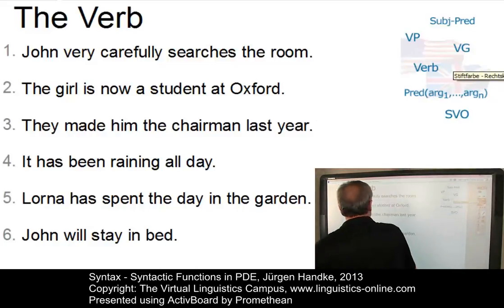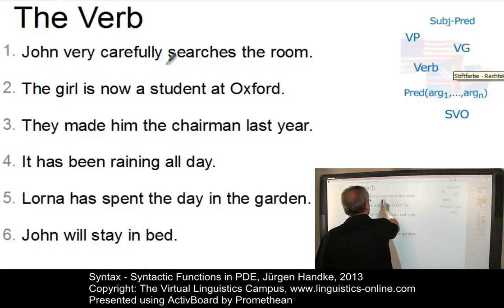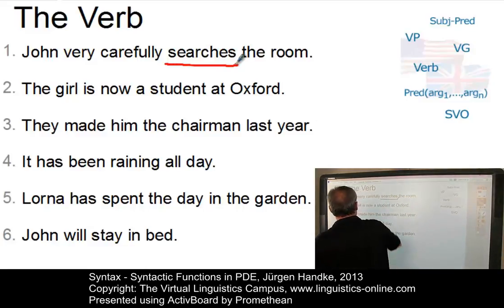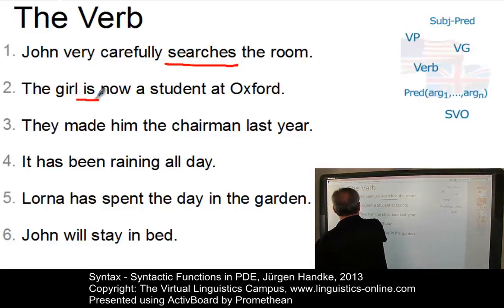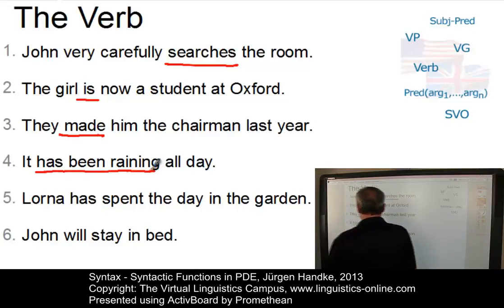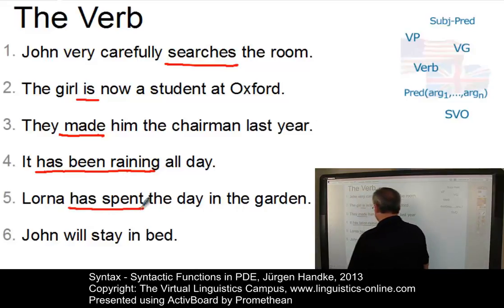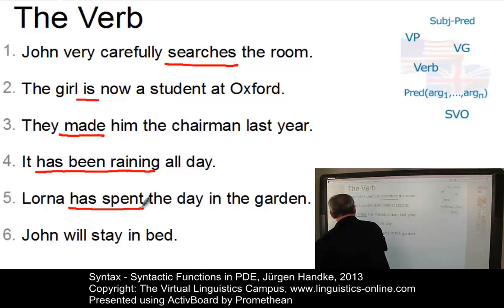Let us underline the verbs first. In sentence number one, it's clearly searches. The verb in number two is here. Made is the verb in number three. Number four has a more complex verb, has been raining. In number five, it's also complex: has spent. And the verb in number six is will stay.